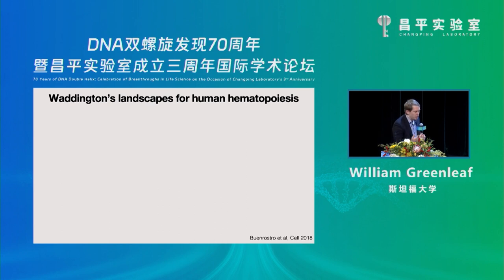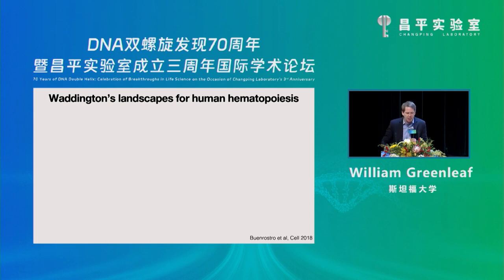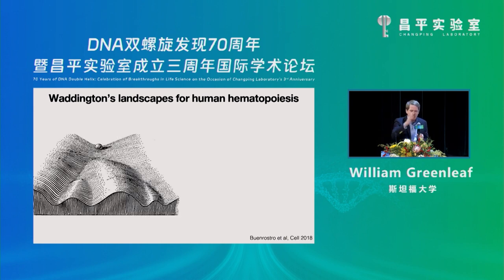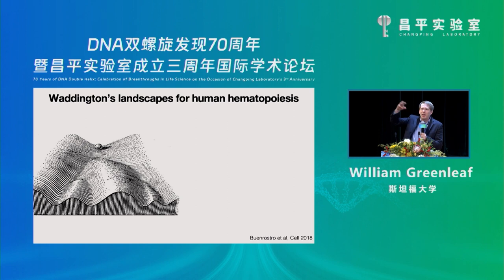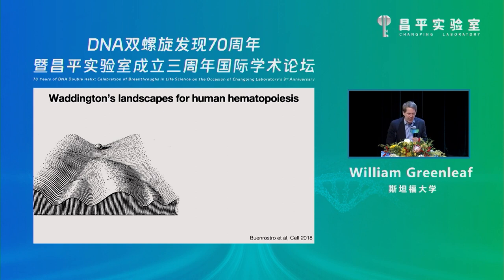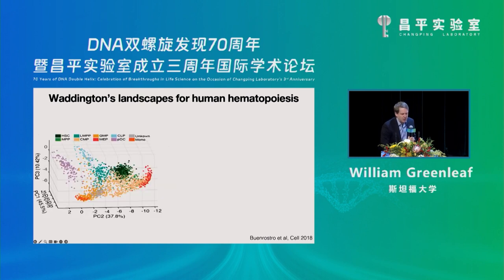You can also deploy ATAC-seq at the single-cell level in multiple ways, both in Fluidigm and 10X. In some sense, looking at the single-cell open chromatin landscape is one instantiation of what Waddington conceptualized as the differentiation landscape. The idea is you're a ball rolling down a landscape with high potential to be different cell types, and as you roll down, you become more and more lineage committed. This open chromatin landscape is some instantiation of that conception.